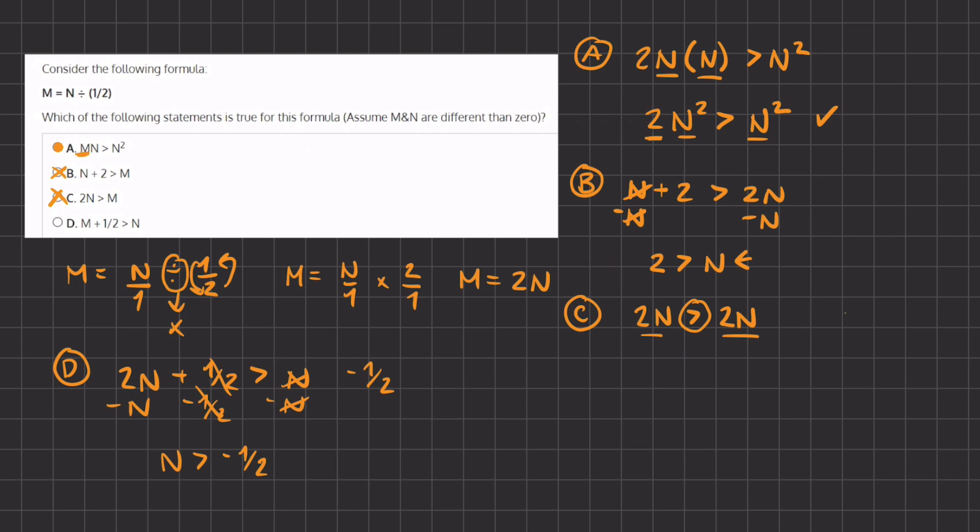And again, because we don't know what the value of N is, we cannot declare that it is greater than negative half, and therefore D is also incorrect. And our final answer will be A.